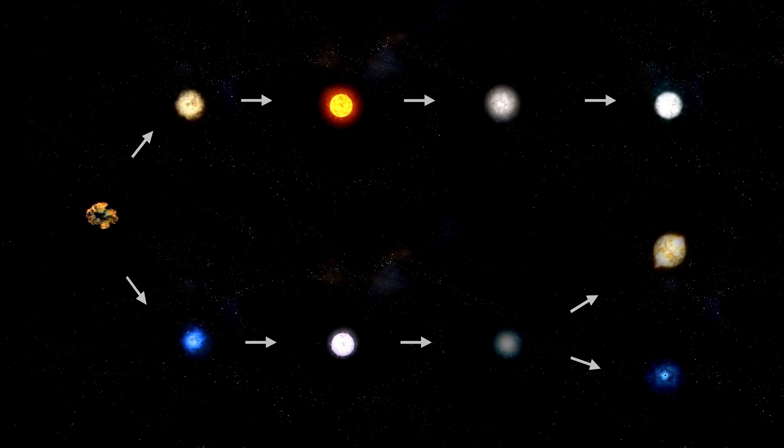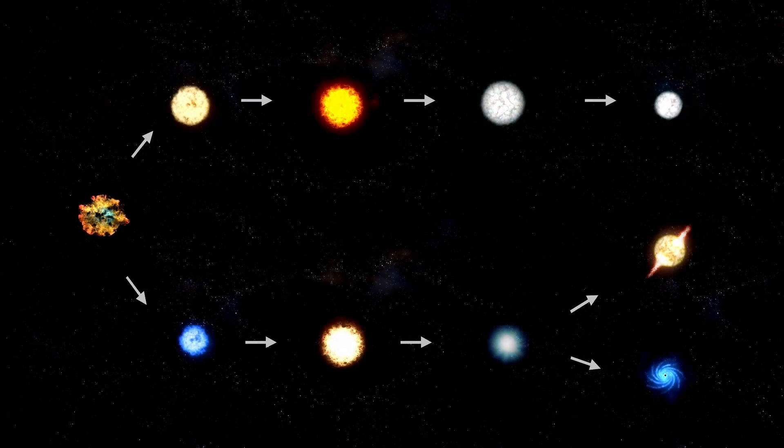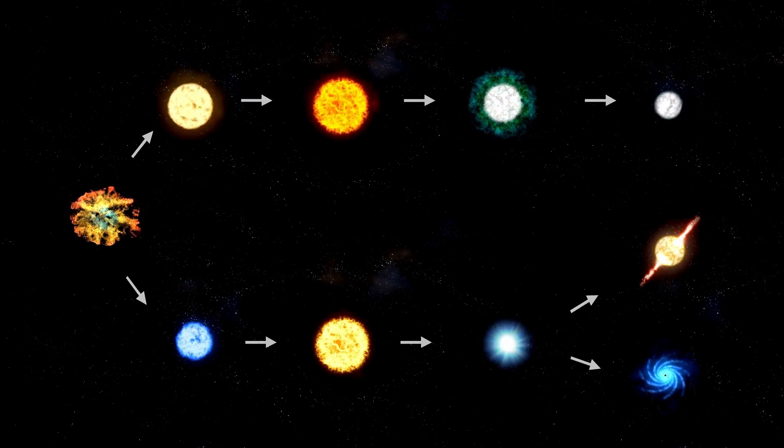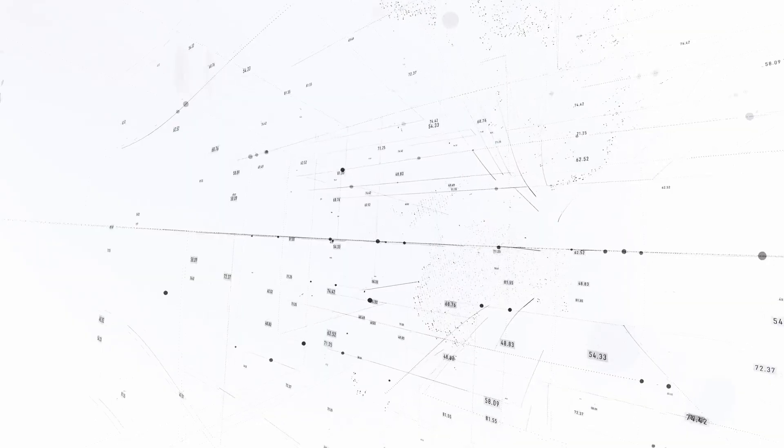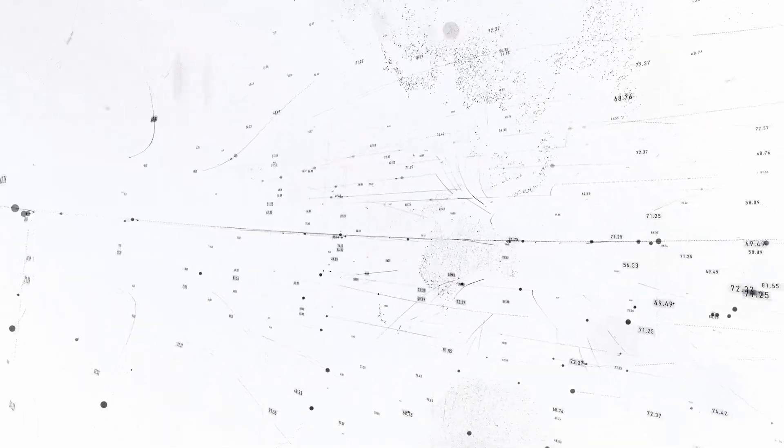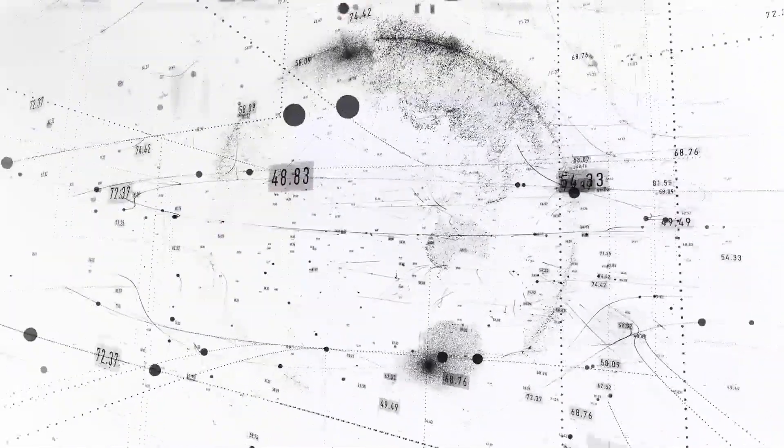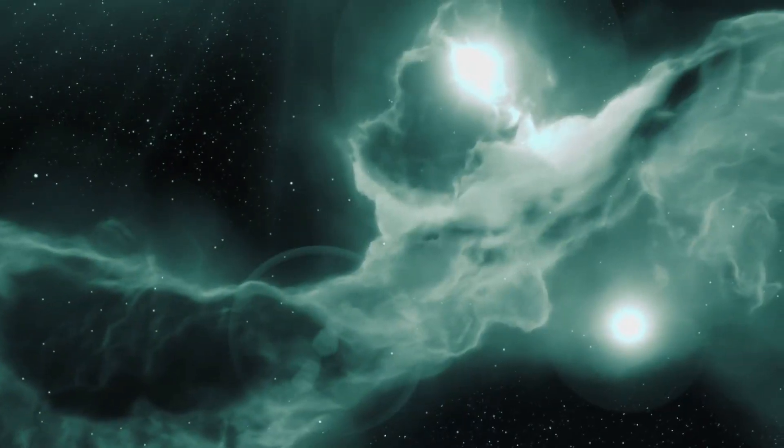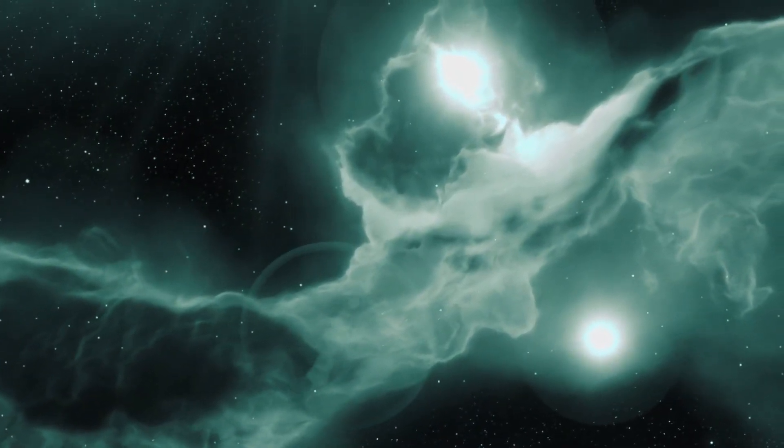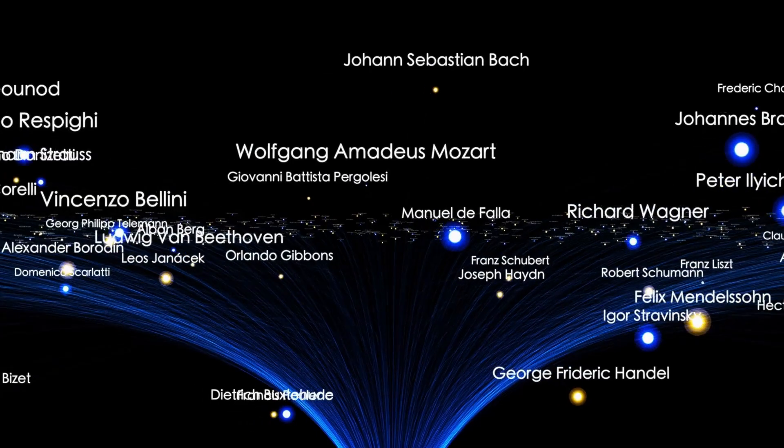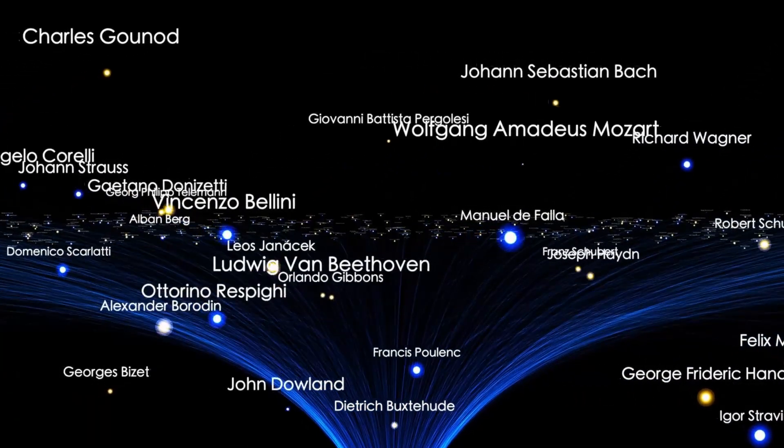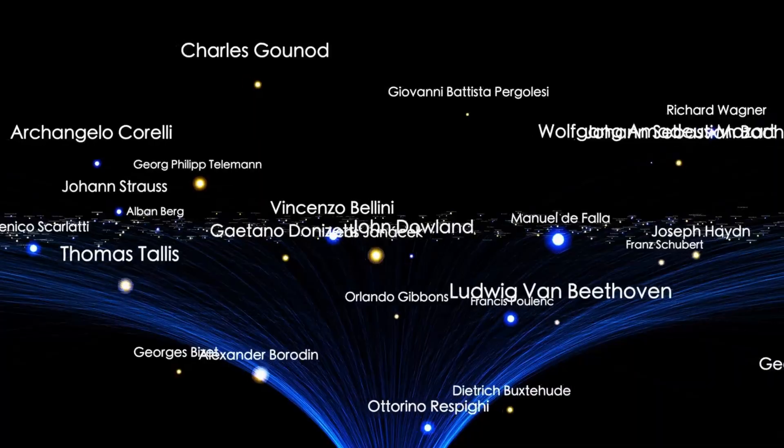In orbital dynamics, every object plays by the same rules. Gravity dominates, gas outgassing complicates, but nothing moves in space without a traceable push. Yet when orbital modelers laid the path of 3ATLAS against reality, something snapped. The math fell short. The simulated trajectory, calculated with extreme precision using gravitational inputs, radiation pressure, and gas ejection estimates, no longer matched the observed data. Over time, the deviation grew, not wildly, but steadily. This wasn't a software error.